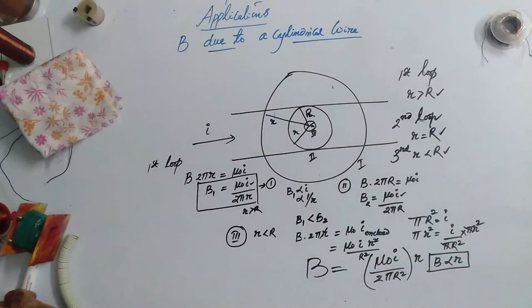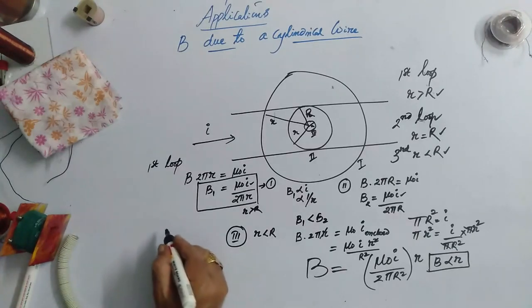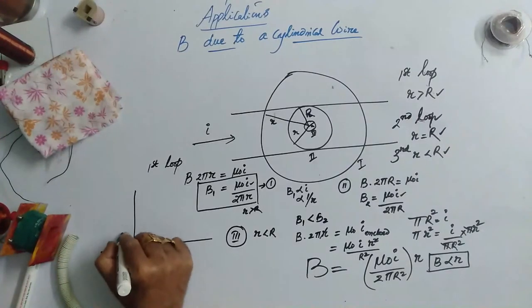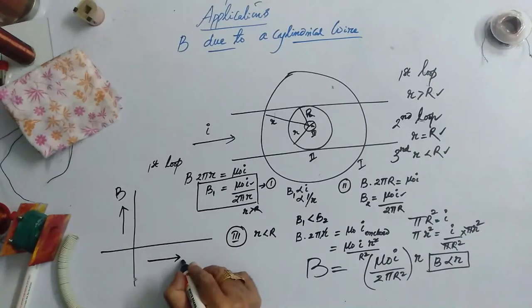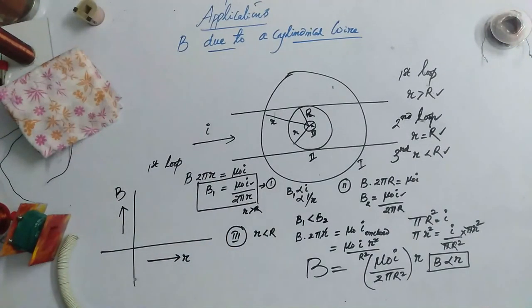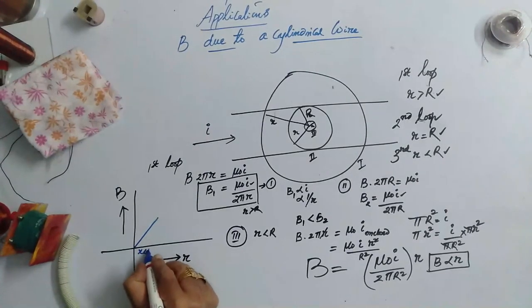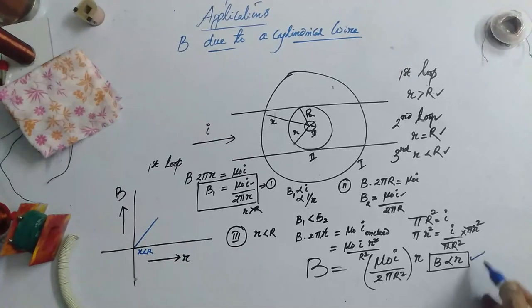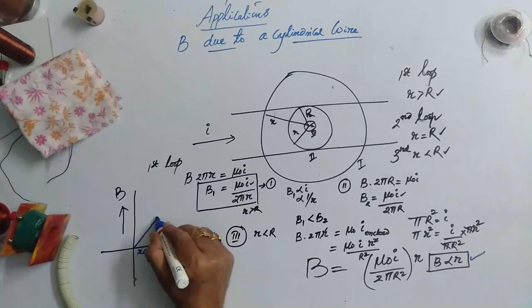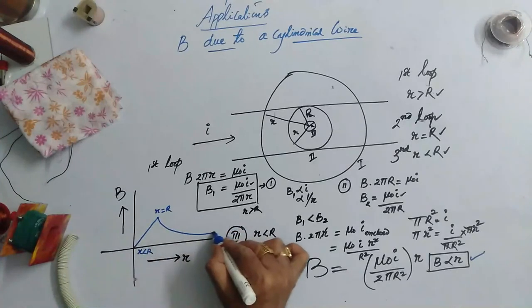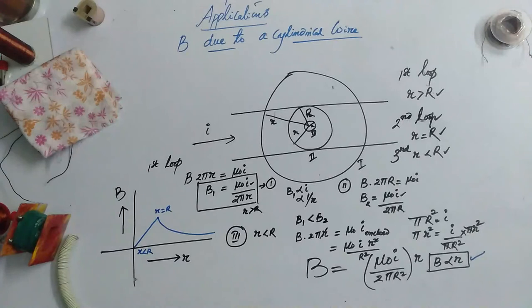Now if you plot a graph for this, here B and here R, if you take inside that is r is less than R, B is directly proportional to r according to this result. Therefore, we get a straight line and maximum at r is equal to R and then it goes 1 over r. So this would be representing a graph for this situation.